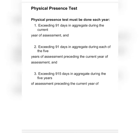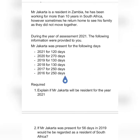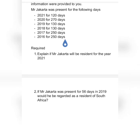Requirement number three says that when we add those previous five years it must be more than 915 days. We add: 270 for 2020, 130 for 2019, 130 for 2018, 250 for 2017, and 250 for 2016. Adding all those days gives more than 915 days, so requirement number three is met. Since all three requirements are met, we conclude that Mr. Jakarta will be regarded as a resident in the year 2021.